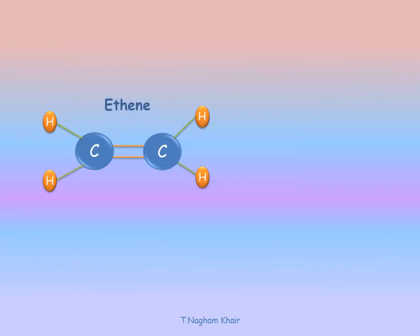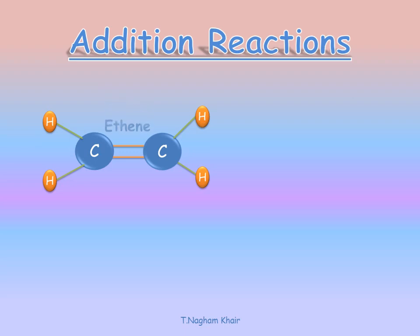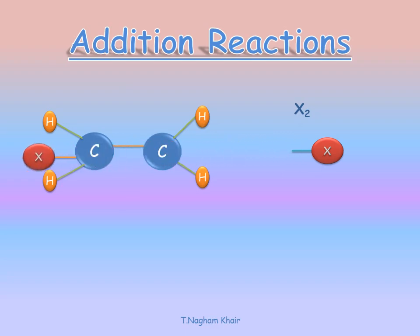Here we have an ethene molecule. What happens when ethene undergoes an addition reaction? Any molecule X2 — I write X for any kind of atoms — approaches the ethene. The unsaturated site, which is the double bond, will break down. This leads one of the atoms to bond to one carbon of ethene, and the second atom will bond to the second carbon atom, as you can see. All the bonds will become single covalent bonds, and the molecule will be saturated by adding two new atoms.